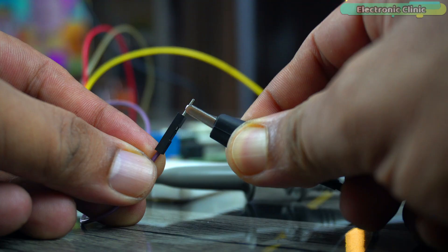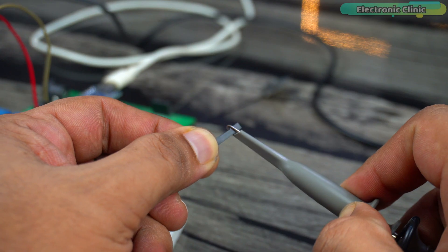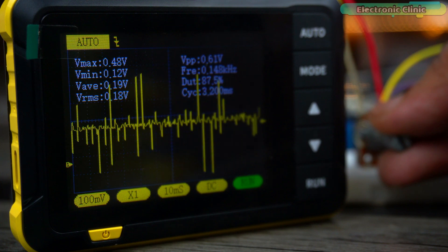In this video, we will fix a common problem that bothers a lot of Arduino users: fluctuating analog sensor values.